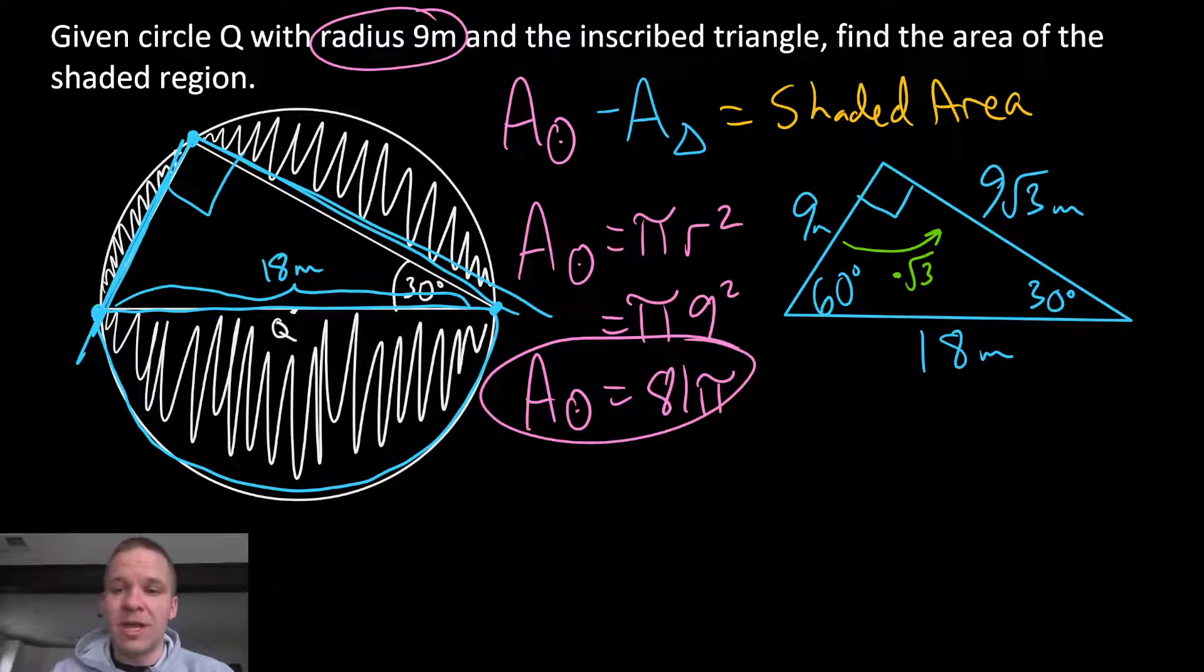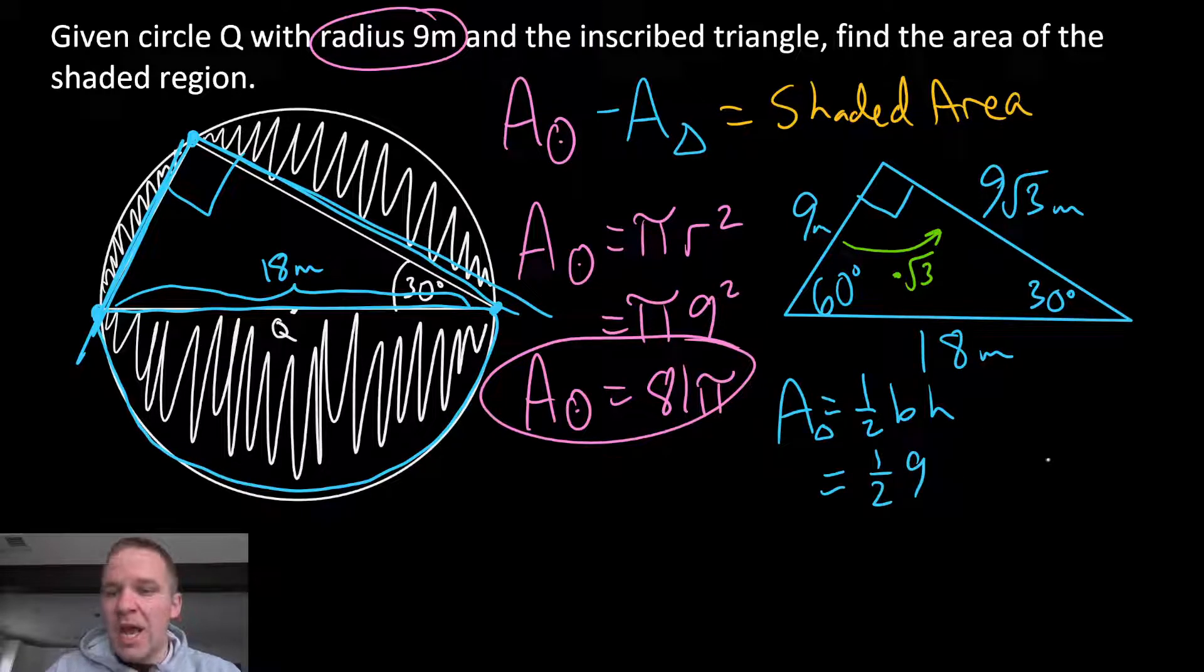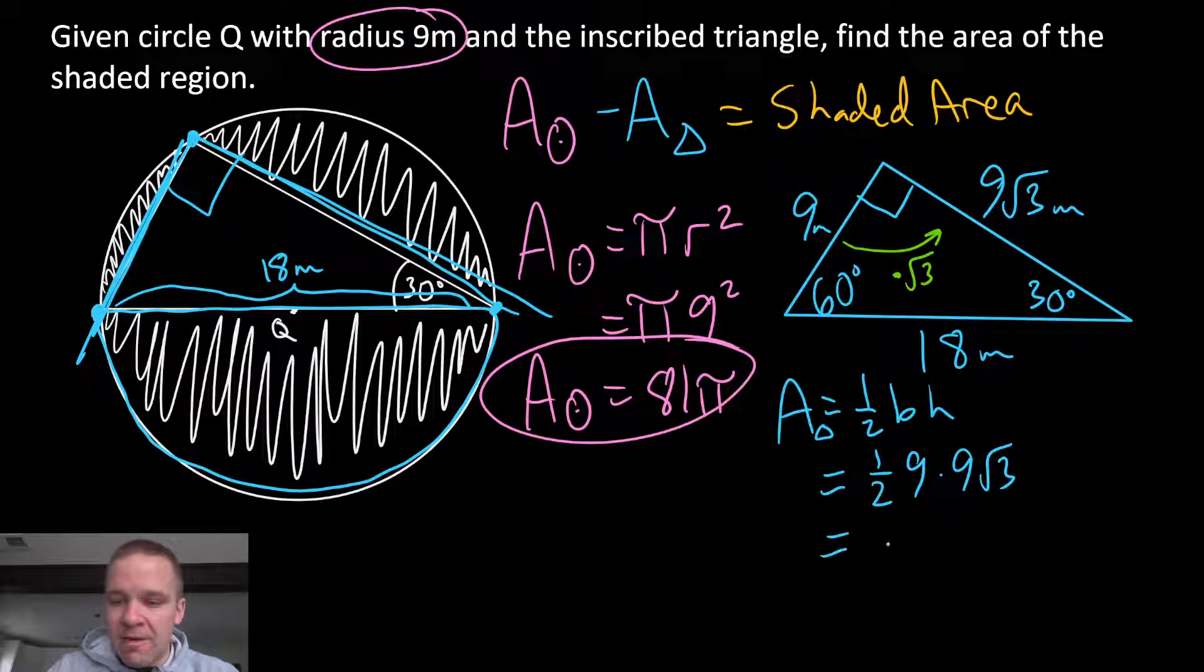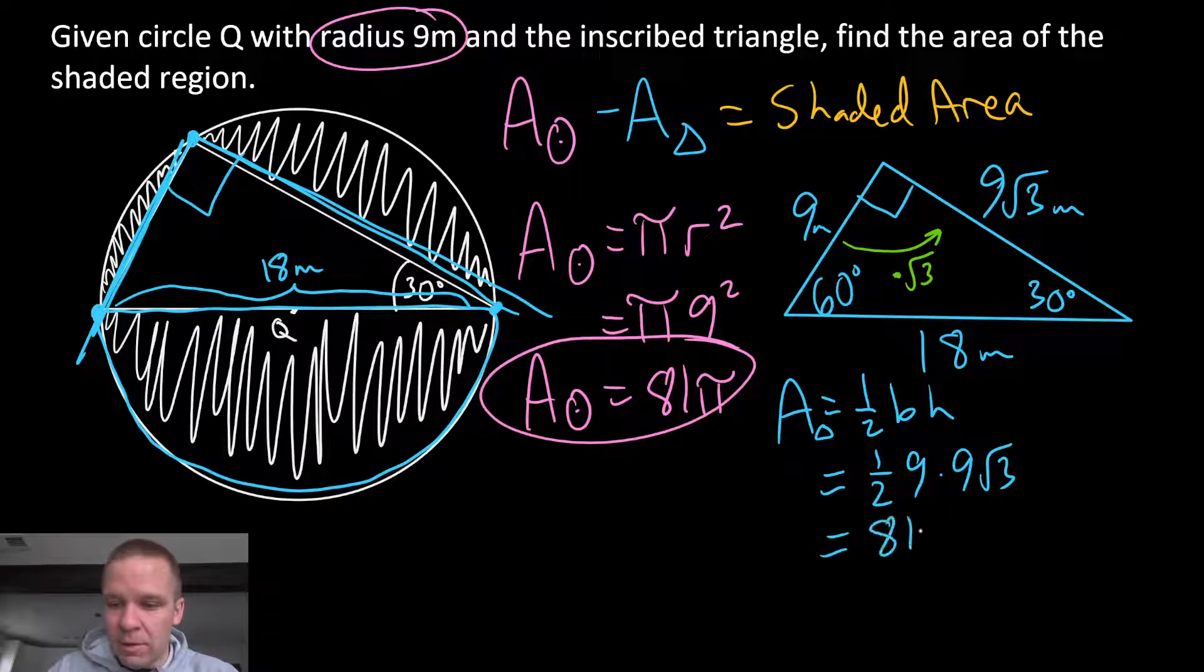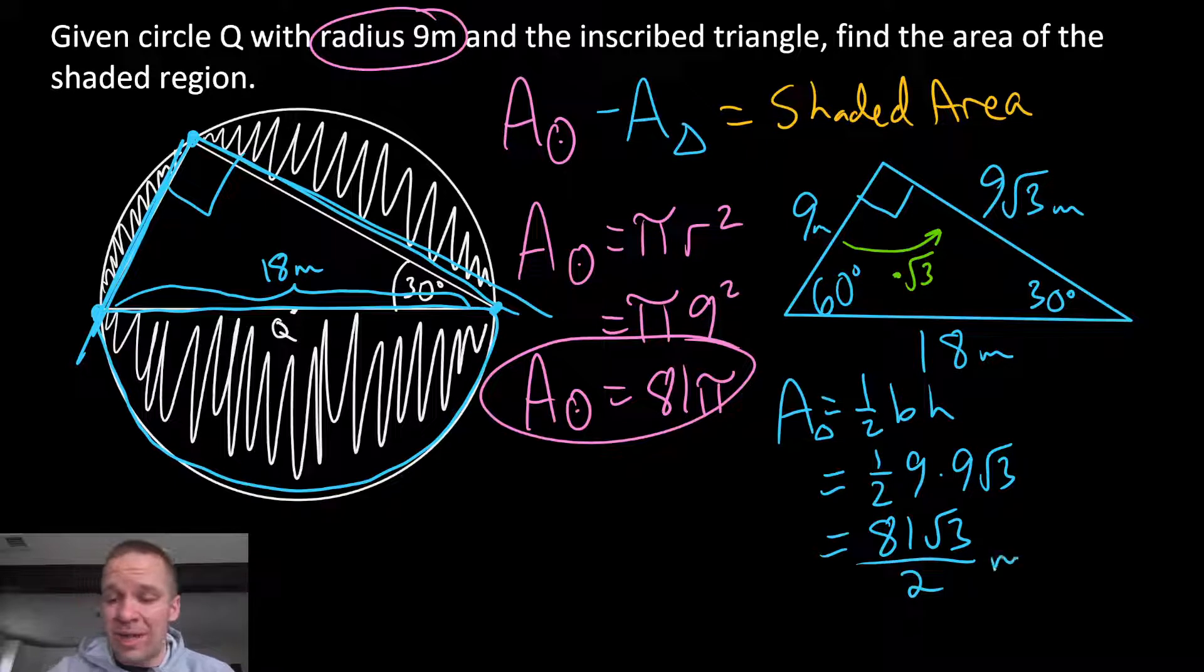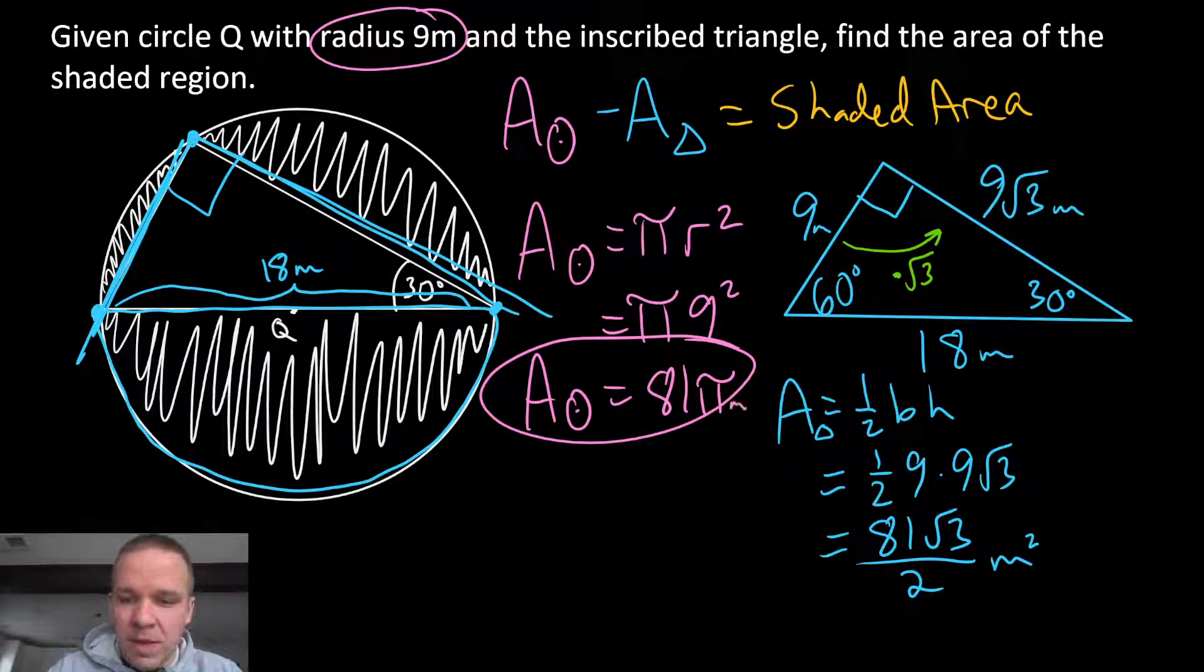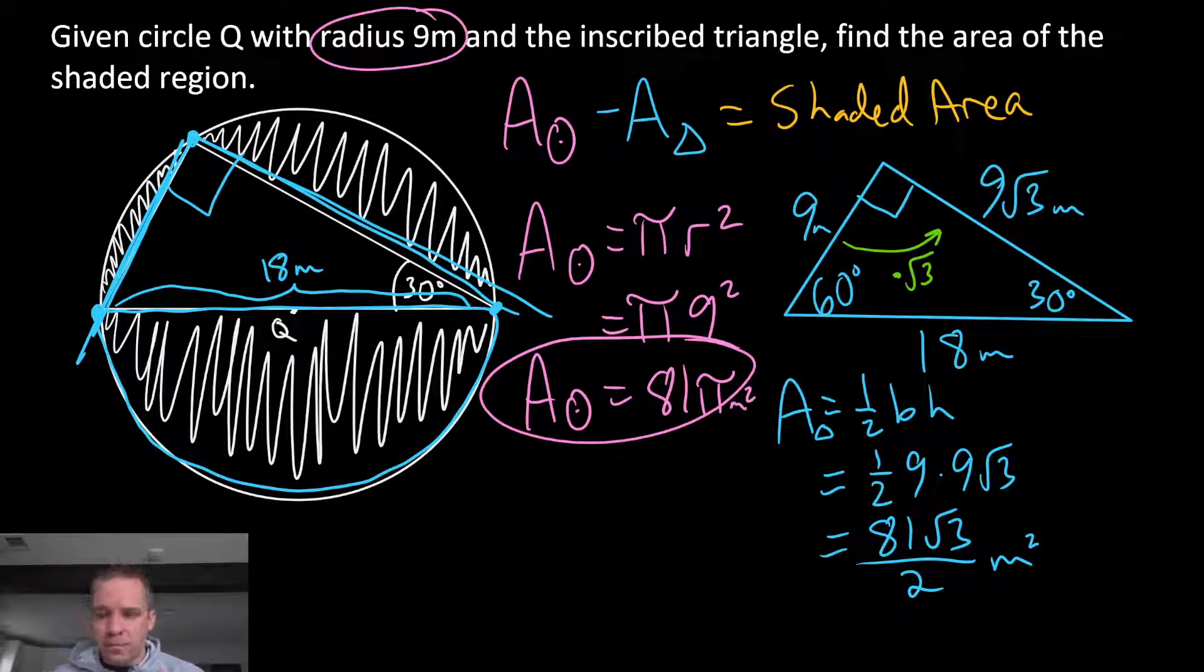Alright. We're cruising, baby. We're cruising. So now I essentially have my base and my height. So area equals one half, this is my triangle, base times height. My base can be any one of those, I'll just choose 9. And then I've got 9 root 3 for my height. So I'm gonna have 81 root 3 over 2. 81 is not divisible by 2, so I'll just go ahead and leave that. That'll be meters squared. I did forget to put my units on my circle there. Meters squared.